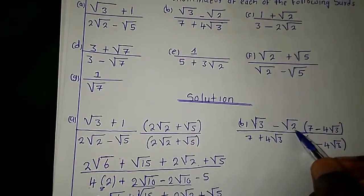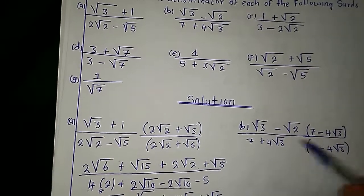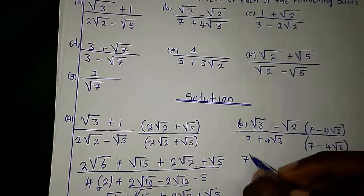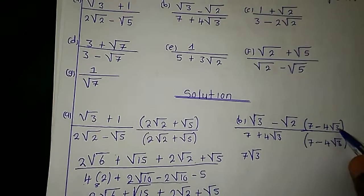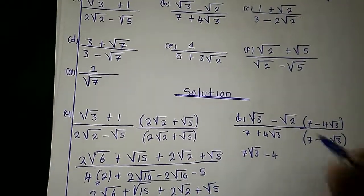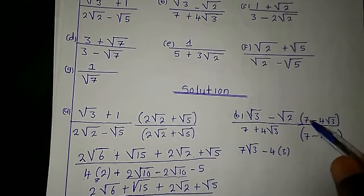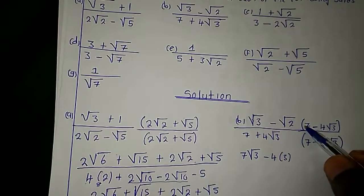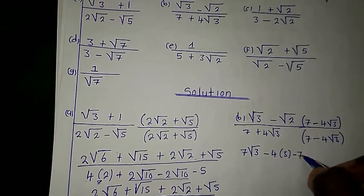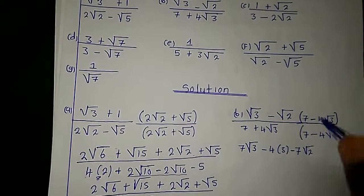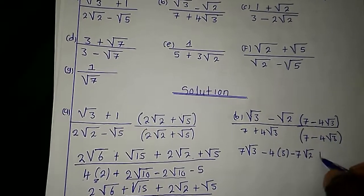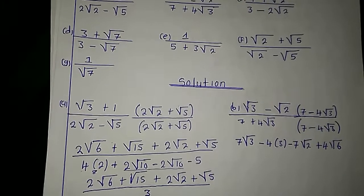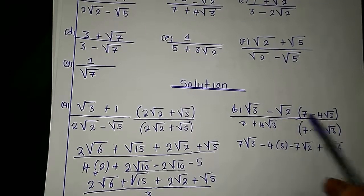Multiplying this by that: this multiplied by this — the answer is going to be 7 root 3. Root 3 multiplied by this — the answer is going to be minus 4, and radical times radical cancels giving us 3 inside. Then this multiplied by this gives negative 7 root 2. Then this multiplied by this gives positive 4 root 6, because the two negatives multiply to become positive.